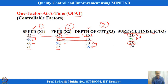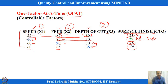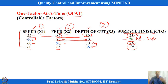We have changed speed, changed feed, and are now changing depth of cut. When depth of cut is changed to 35, we observe a value of 24, which is inferior to the best value obtained. Out of these four experimental trials done as one-factor-at-a-time, the best position is: speed = 60, feed = 85, depth of cut = 30, giving a surface finish of 29.